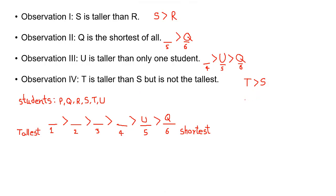T is taller than S. So T cannot be the first and T has two students after it. So T will be second, S will be third and R will be fourth. T, S, R.